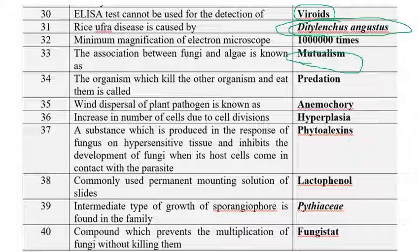The organism that kills another organism and eats it is called a predator, and the mechanism is called predation.